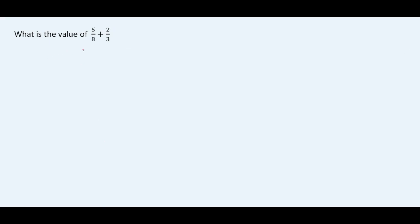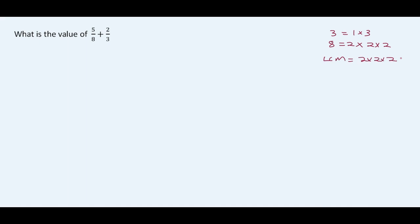Second question: 5 over 8 plus 2 over 3. We have 3 and 8. 8 is 2 times 2 times 2, and 3 is 1 times 3. So the LCM here is going to be 2 times 2 times 2 times 3, which is 8 times 3, which gives us 24.